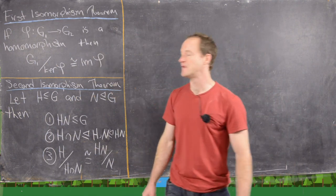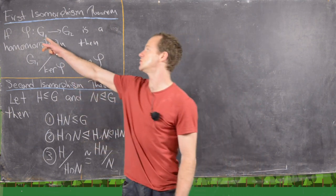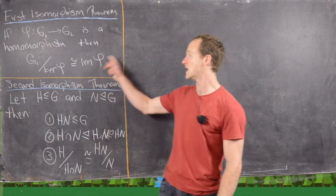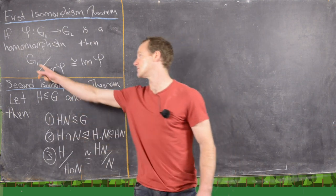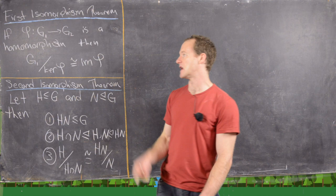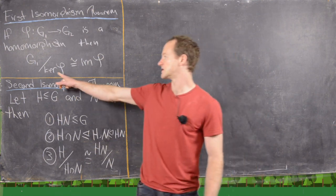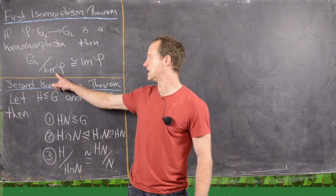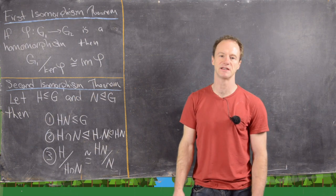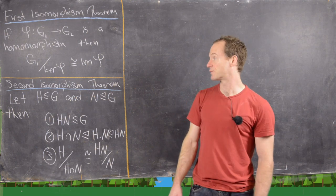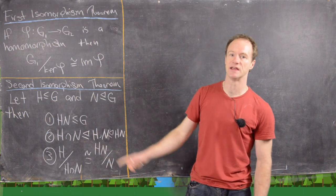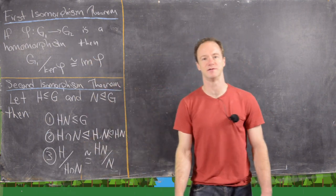If we have phi, which is a homomorphism between two groups G1 and G2, then we have the following isomorphism between G mod the kernel of phi and the image of phi. Notice that the kernel of phi needs to be a normal subgroup of G1 in order for the left-hand side to make sense — but it is, and that's easy to prove. The image of phi is a natural subgroup of G2.